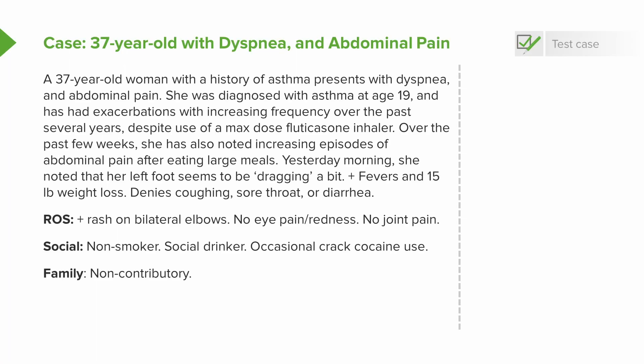That's a lot of information. Let's highlight four particular variables that we always assess. Number one: the time course. This is a complicated time course. On one hand, we've got something that's been going on since she was 19 — about 20 years of increasing asthma exacerbations. But then we've got new symptoms starting a few weeks ago, and things that just started yesterday morning. I'd call this an acute on subacute on chronic picture.